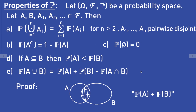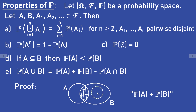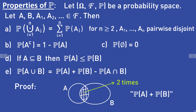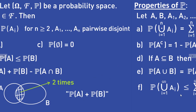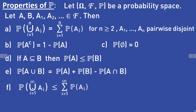To see the inclusion-exclusion formula, take a look at the following picture. By adding the probability of A and the probability of B you add up the probability of the intersection twice, so you have to subtract the probability of the intersection. Finally, the probability of the countable union of the sets Ai is less than or equal to the sum from i equals 1 to infinity of the probabilities of the sets Ai. This property is called sigma sub-additivity.